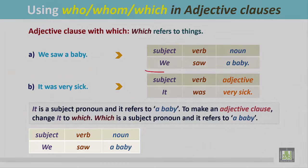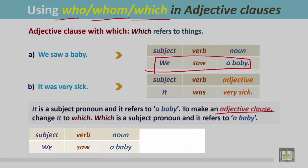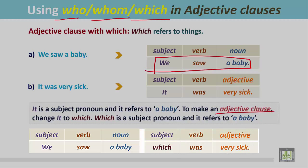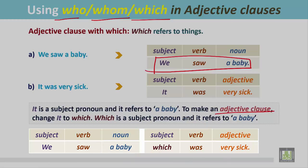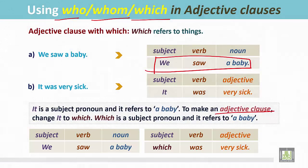First, write the first sentence complete: 'We saw a baby.' Since the adjective clause begins with who, whom, or which, begin the adjective clause with 'which': 'which was very sick.' This is the adjective clause. The condition is that it follows the noun immediately. 'A baby' is the noun, and the adjective clause follows it, giving information about and modifying that noun. The complete sentence: 'We saw a baby which was very sick.'